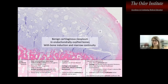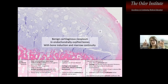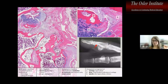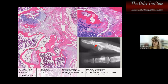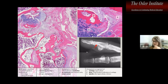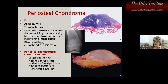Secondary chondrosarcoma tends to grow outward — that cauliflower-like proliferation on the surface is the warning sign. BPOP (bizarre parosteal osteochondromatous proliferation) tends to occur in small digits, occasionally subungual. These are disorganized proliferations of hyaline cartilage, bone, and spindle cells, lacking the nice organization of an osteochondroma.